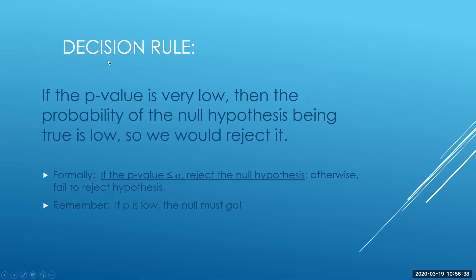All right, so here's how we make our decision. If the p-value is very low, then the probability of the null hypothesis being true is also low, so we reject it. Here's the formal definition for it. If the p-value is less than or equal to alpha, our significance level, we reject the null hypothesis. Otherwise, we fail to reject the null hypothesis.